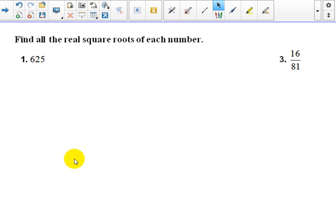Number 1 and 3, find all the real square roots of each number. So you want to start out by taking the square root of 625.